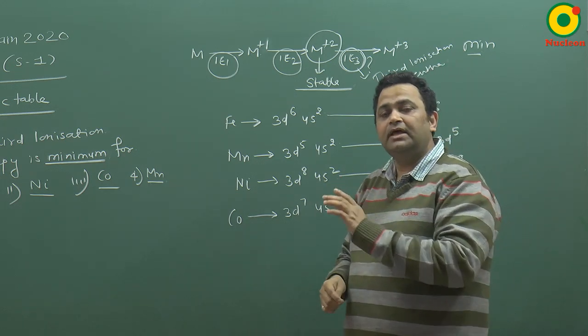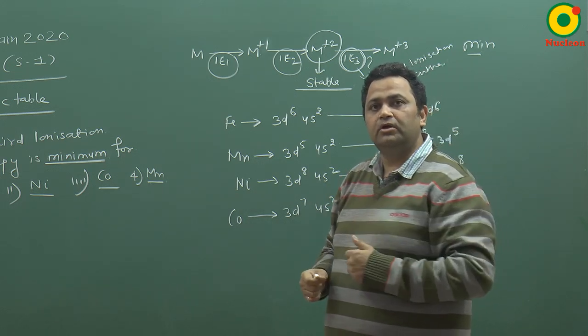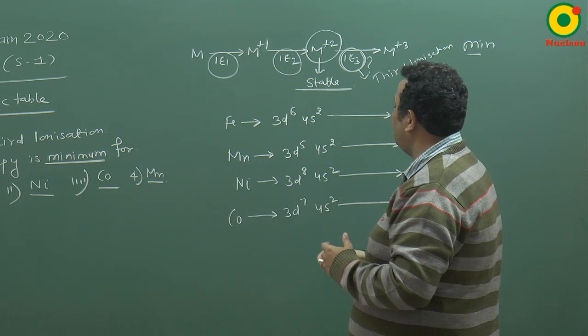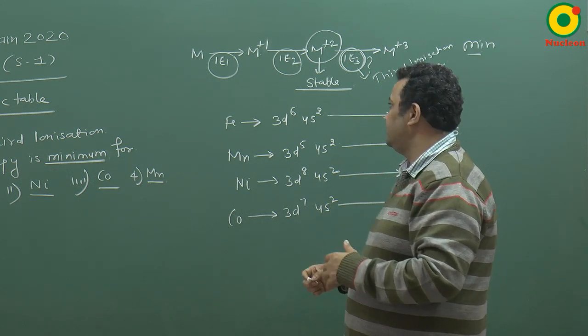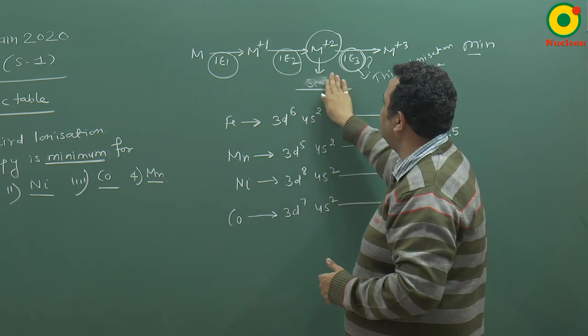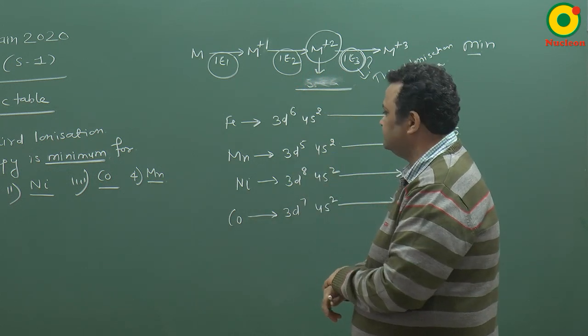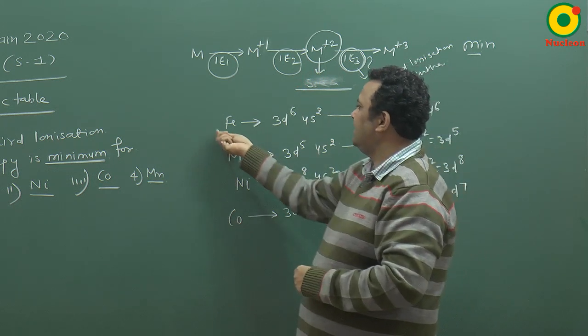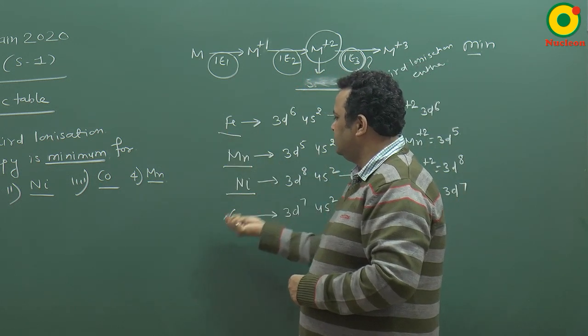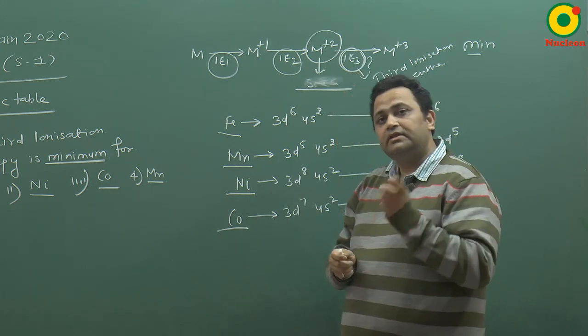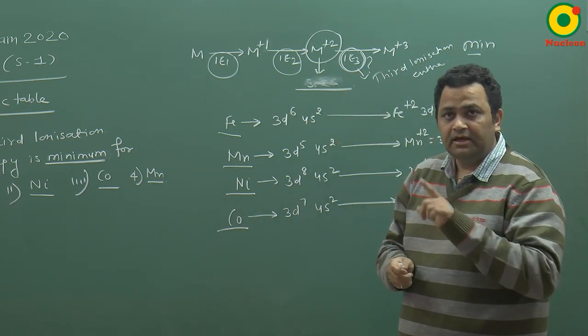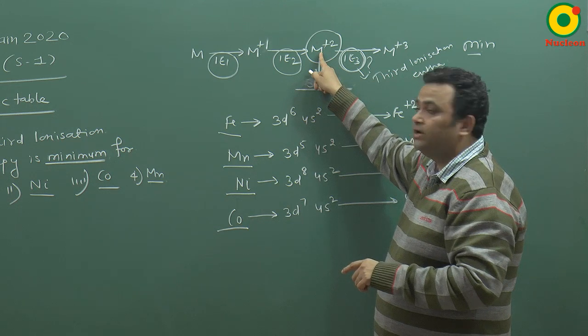If it is stable, it will be difficult to remove the electron. And if it is unstable, then it will be easy to remove the electron. There are four options: iron, manganese, nickel, and cobalt. For the third ionization enthalpy,